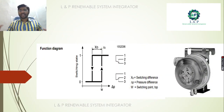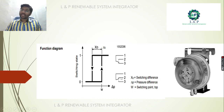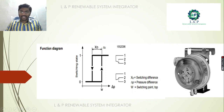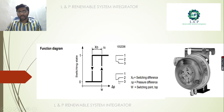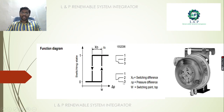In the functioning diagram, terminals 1 and 2 are normally in the NC position. Whenever a pressure change occurs based on the set point, it immediately changes position to terminal 3. So, just like a switch, the NC contact changes to NO, and the terminal that was already in the NO position changes to NC.